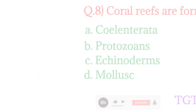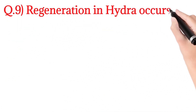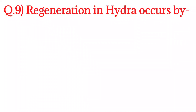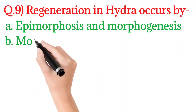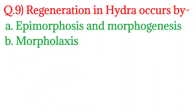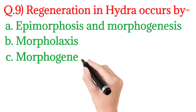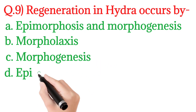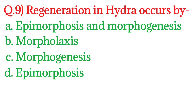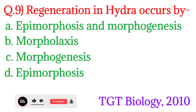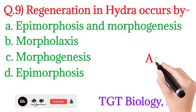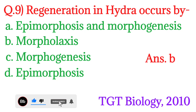Next question number 9: Regeneration in Hydra — Hydra में पुनर्जनन होता है। Option A is Epimorphosis and Morphogenesis, Option B is Morphallaxis, Option C is Morphogenesis, and Option D is Epimorphosis. यह question TGT Biology 2010 में पूछा गया था। इसका answer होगा Option number B — Morphallaxis.